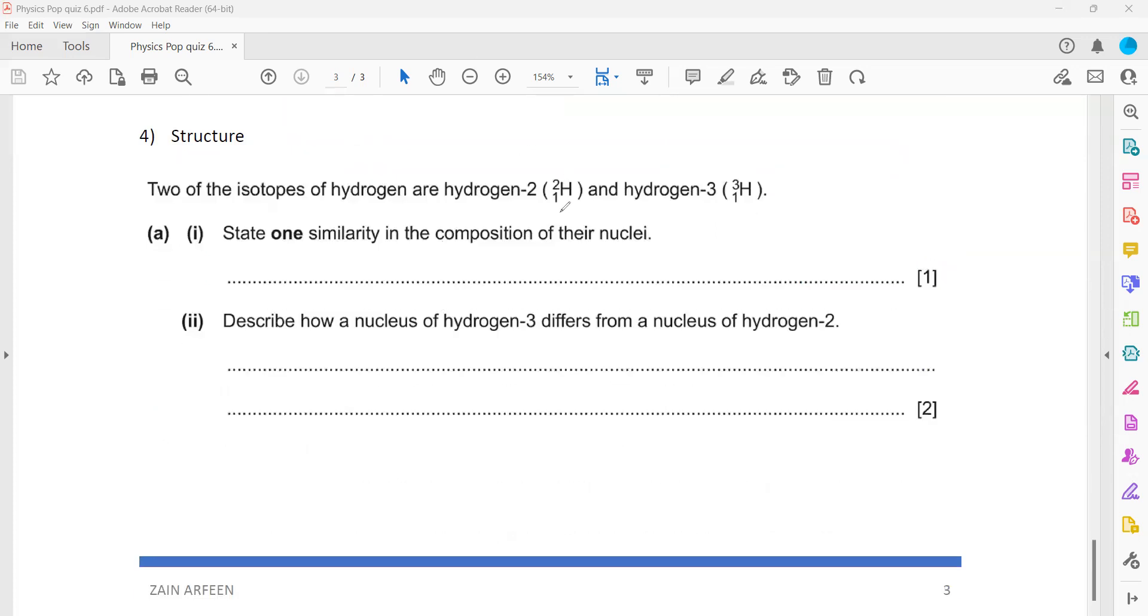Two isotopes of hydrogen are there: hydrogen-2 (H-2) and hydrogen-3 (H-3). One similarity - how they are similar to each other? When we work it out, hydrogen-2 will have one proton and one neutron. Hydrogen-3 will have one proton and two neutrons. So one similarity in the composition - they will have the same proton number. And how does the nucleus of hydrogen-3 differ from hydrogen-2? You have to write two differences. First thing, they will have a different number of neutrons. They also have different nucleon numbers. Hydrogen-3 is having two neutrons where hydrogen-2 is having one neutron. Is it clear?